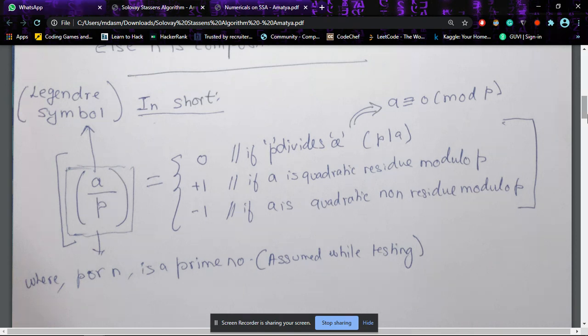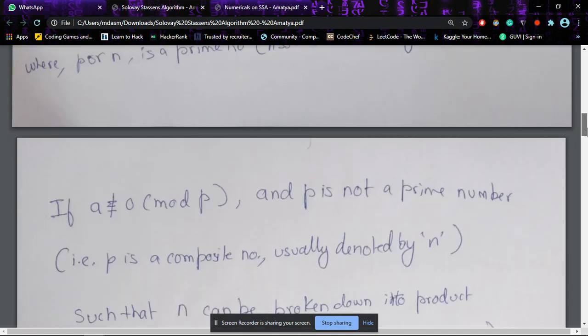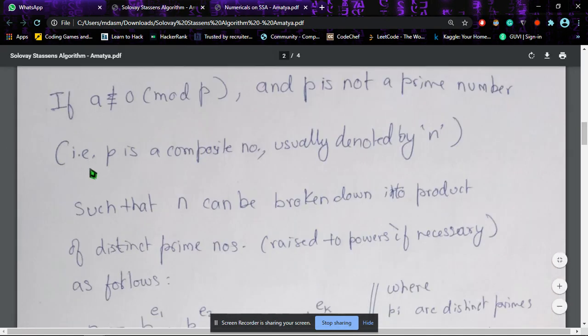To know that and for the formal definition of the Jacobi symbol, let's proceed. Suppose if a is not congruent to 0 mod p, and p is not a prime number—that is, p is a composite number—usually denoted by n. So we do not denote it by p anymore; we will use the symbol n, but the expression remains the same.